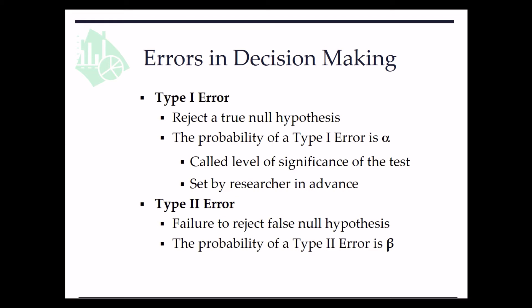The probability of a type 2 error in hypothesis test is denoted beta.